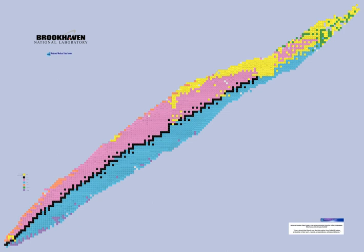== Stability == The Mattauch isobar rule states that if two adjacent elements on the periodic table have isotopes of the same mass number, at least one of these isobars must be a radionuclide. In cases of three isobars of sequential elements where the first and last are stable — often the case for even-even nuclides — branched decay of the middle isobar may occur. For example, radioactive iodine-126 has almost equal probabilities for two decay modes, which lead to different daughter isotopes: tellurium-126 and xenon-126.